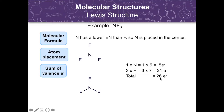After that, we draw a single bond from each surrounding atom to the central atom and subtract 2 electrons for each bond from the total number of valence electrons. In this example, we subtract 6 from 26, since we already used 3 bonds representing 6 electrons. So 26 minus 6 leaves us with 20 remaining electrons.